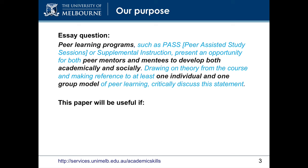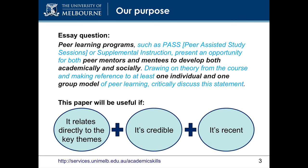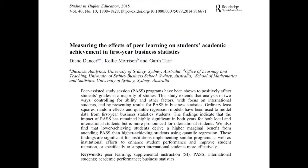For the paper to be useful, it needs to relate directly to these themes. As we're writing an academic paper, we also need to check it's credible and recent. Now we know the criteria, we can start skimming. Let's start by considering the title, author, date and publisher. This helps us to determine both relevance and credibility.